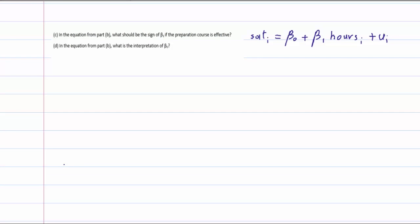Finally, I'm going to do questions C and D together. For question C, they ask you: in the equation from part B that I just rewrote here, what should be the sign of beta one if the preparation course is effective? If we take more hours in the preparation course, we should expect our SAT score to be higher. So we expect beta one to be positive, greater than zero.